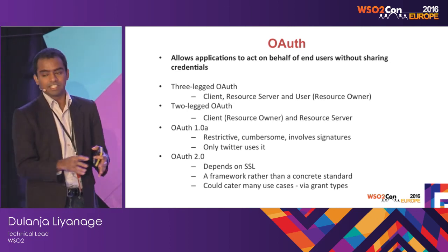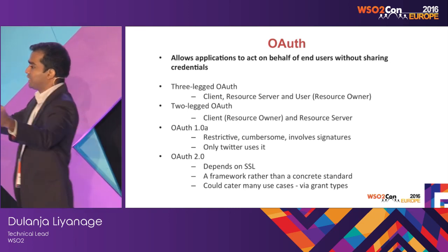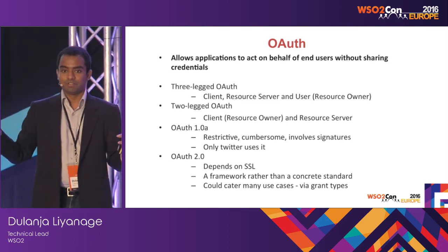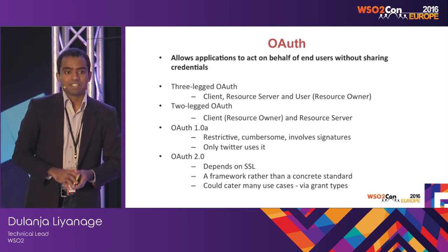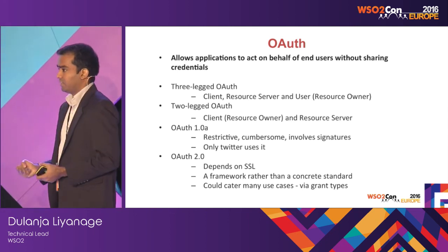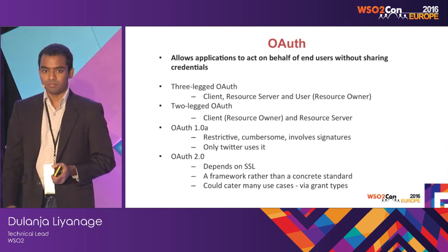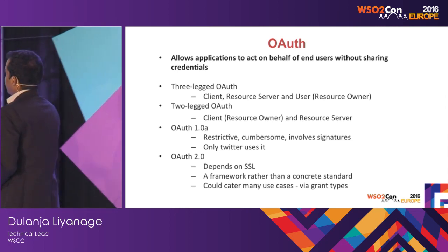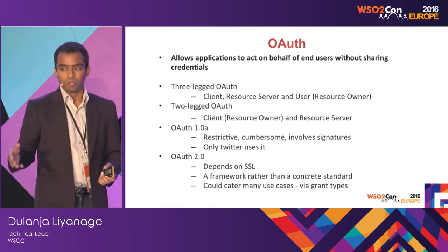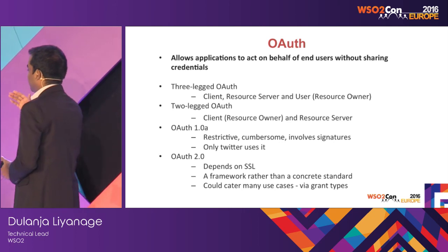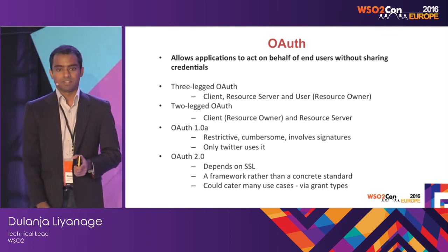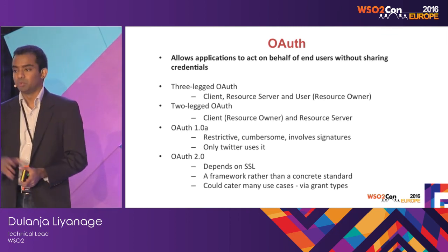The application authenticates with the weather API and gets the weather information and displays it on the website — weather is not provided on behalf of a user. In such a scenario, where data is owned by the app itself, you can use two-legged OAuth. The first version was OAuth 1.0, then a vulnerability led to OAuth 1.0a. Only Twitter still uses it; all others have moved to OAuth 2.0.